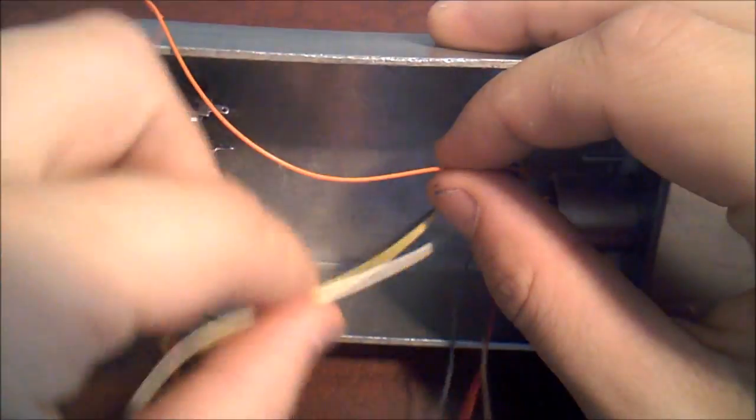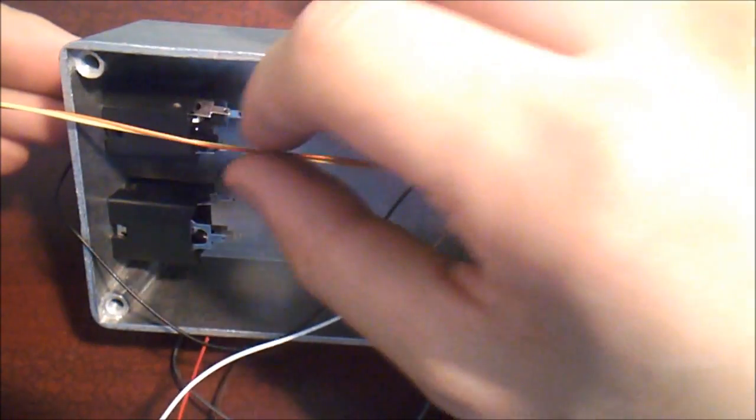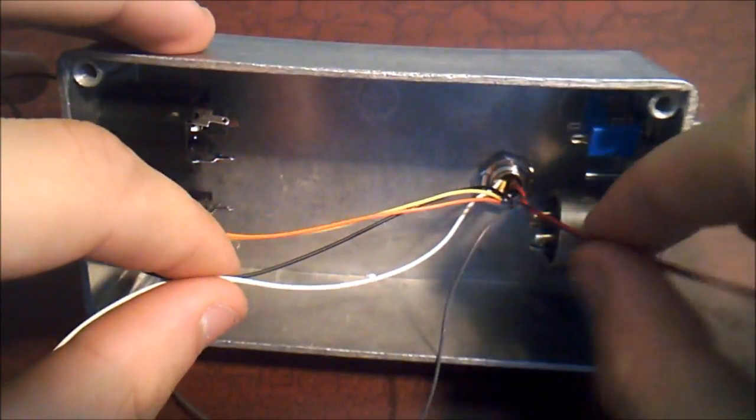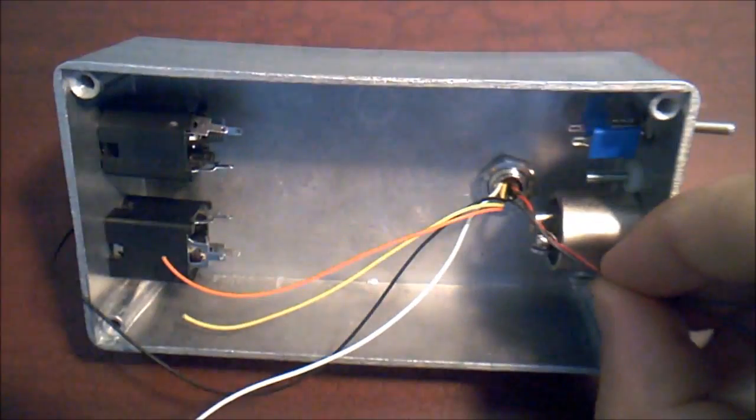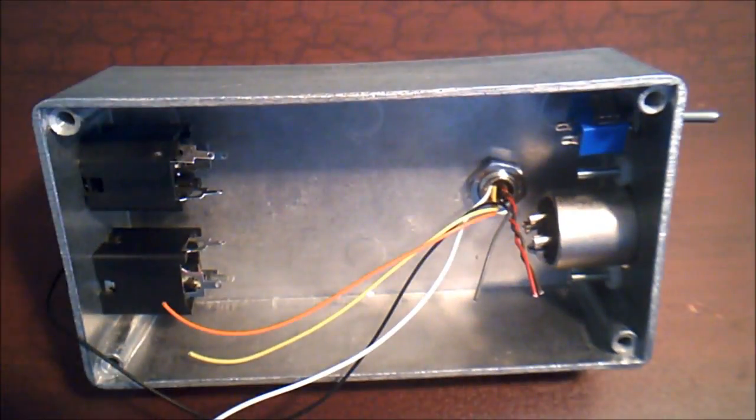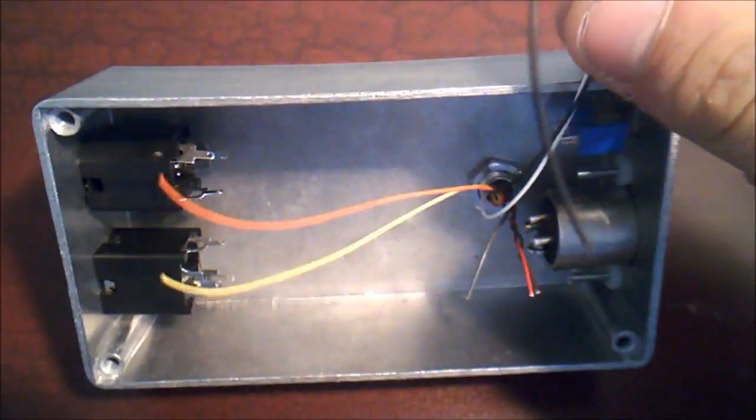Now we're going to put all of our jacks and the transformer in the case, and stretch the transformer leads to where they'll need to be so we can clip them to the right length. You'll see I'm leaving about half an inch or so, just to leave some margin of error, so I don't clip them too short. Too long is, of course, better than too short.